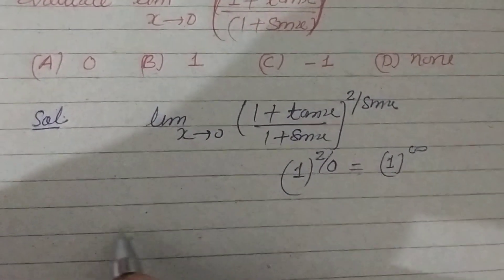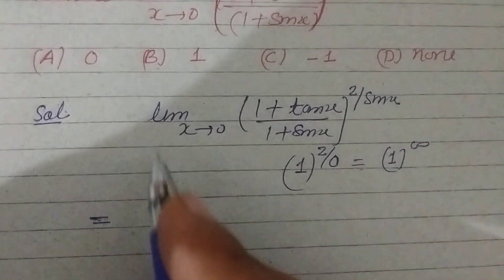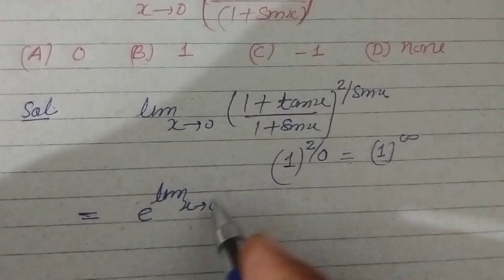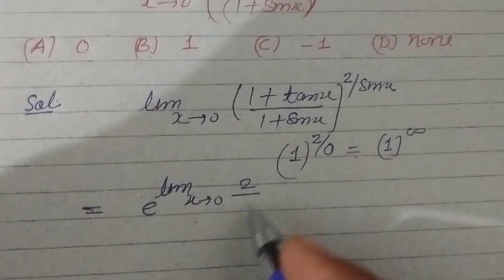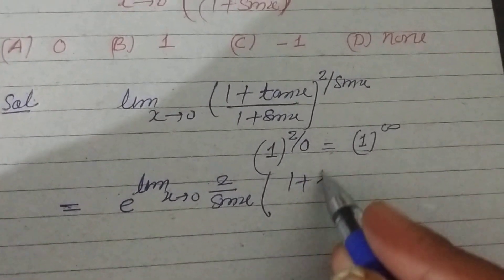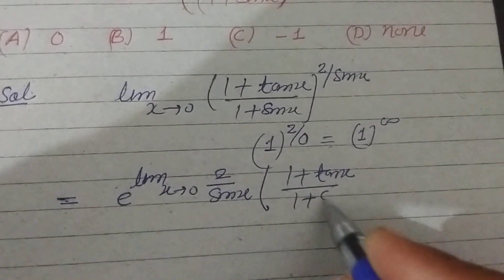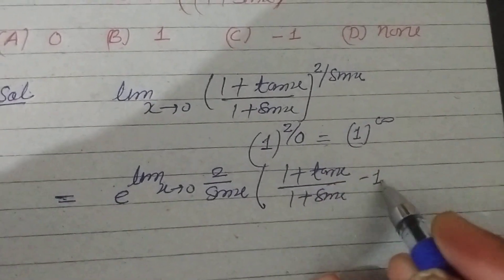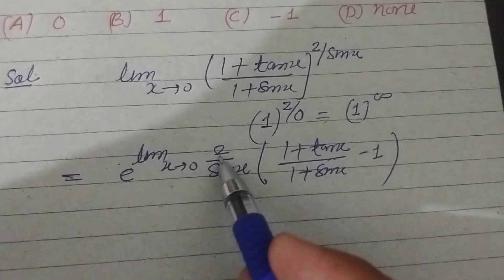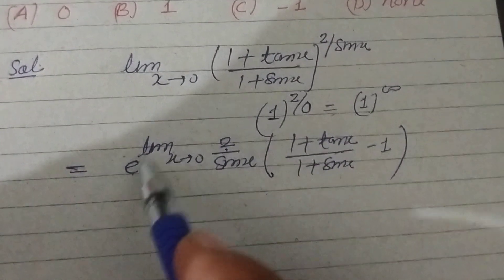So now we take the given expression as e to the power limit x tends to 0, with exponent 2 upon sin x, and the trick is to write (1 + tan x)/(1 + sin x) minus 1, bringing it into the exponent.